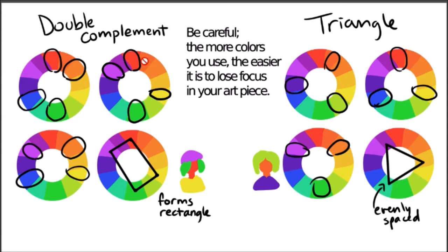A double complementary scheme is kind of self-explanatory — it tends to form a rectangle on the color wheel. So you would have maybe red, purple, orange, and blue on your piece, or you would have green, red, orange, and blue.